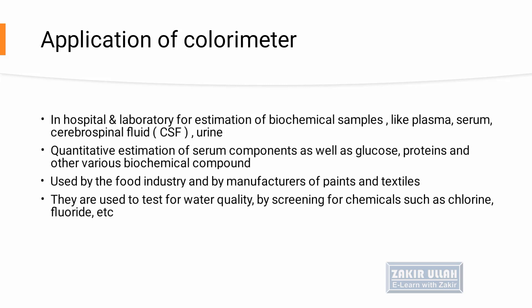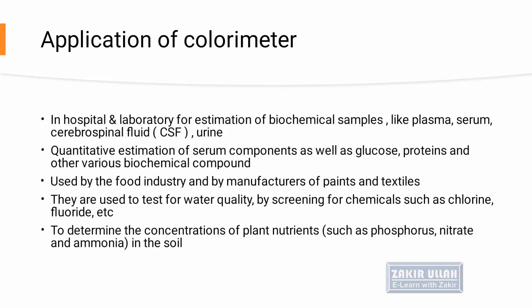Colorimeters are used for testing the quality of water and for screening chemicals such as chlorine, fluoride, and other substances present in water. Colorimeters are also used to determine the concentration of different plant nutrients such as phosphorus, nitrates, and ammonia in the soil to check soil quality.